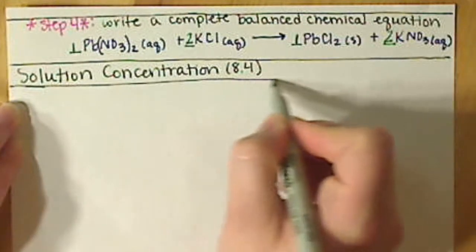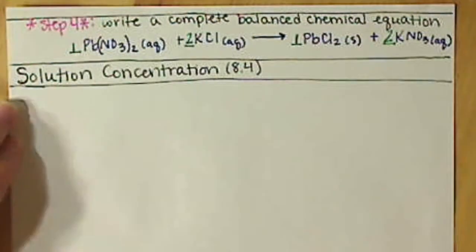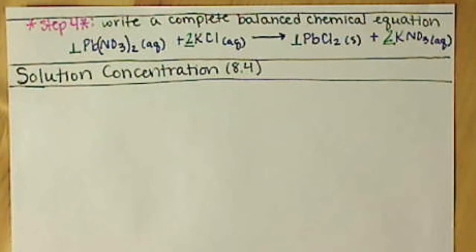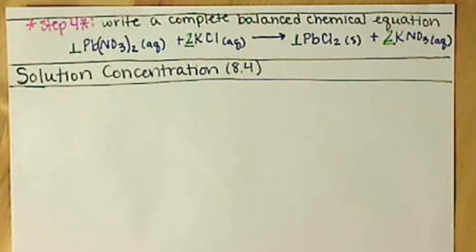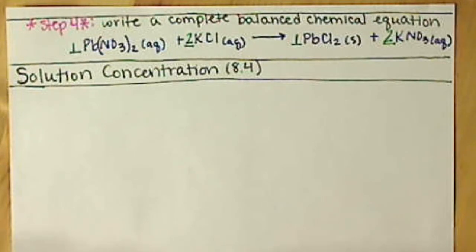From your pre-lecture worksheet, you will notice that there are four different types of solution concentrations that we're going to talk about. There are more out there, but we're just going to concentrate on the four. There are three percent compositions, and then the fourth one — which is the more important one for chemistry — is molarity. This video is going to concentrate on the percent compositions, and the next video will look at molarity.